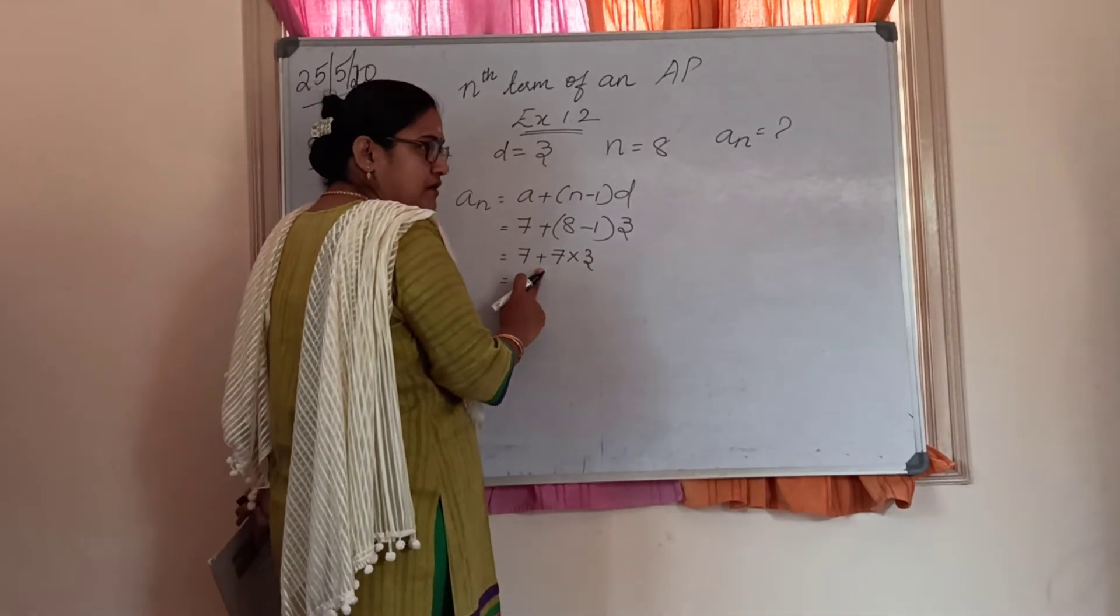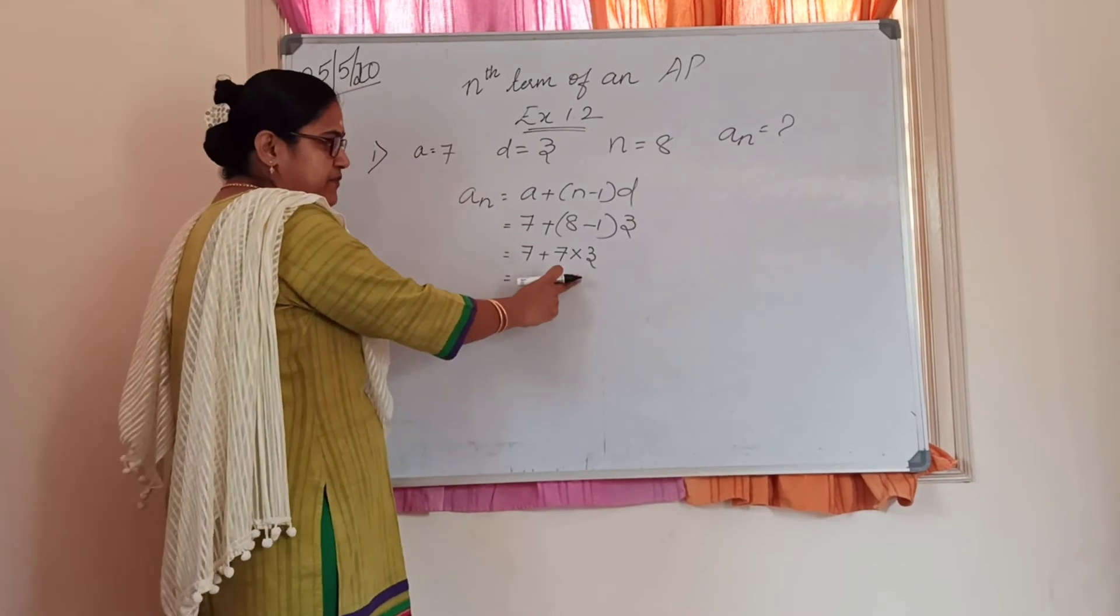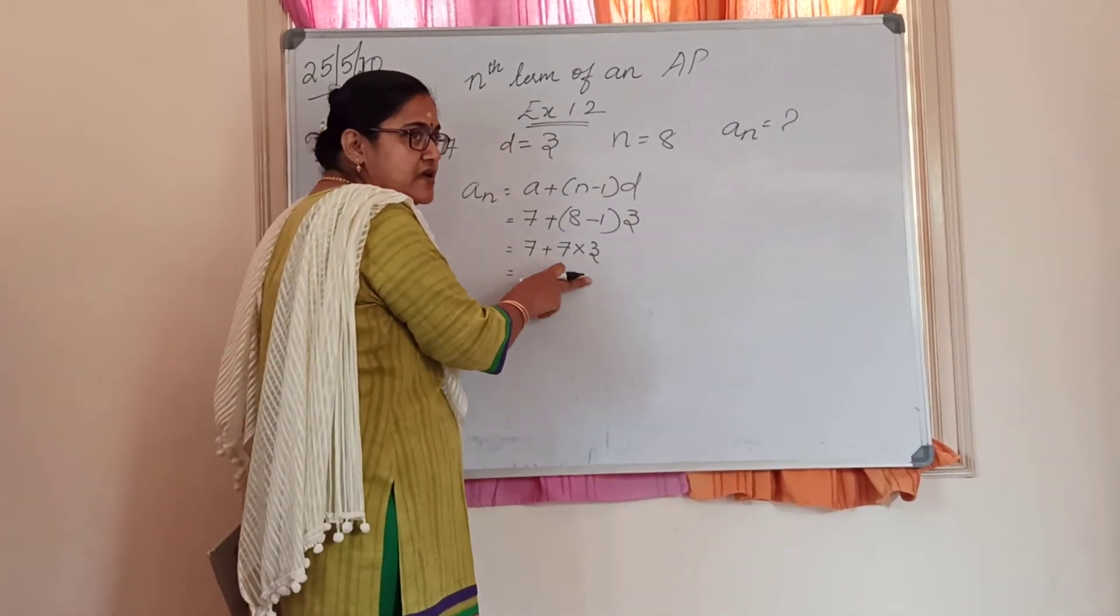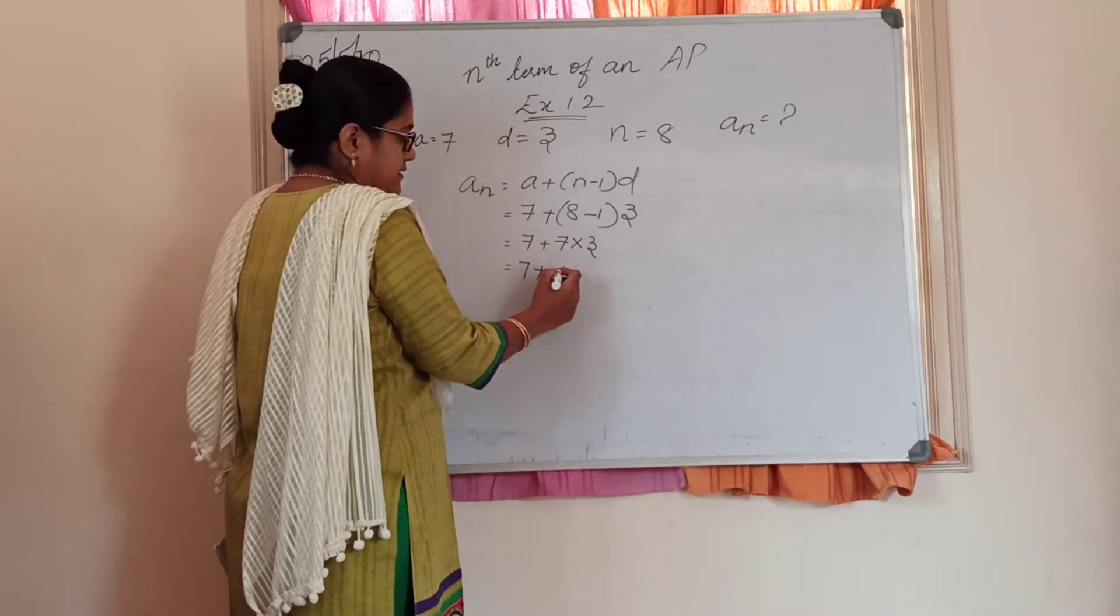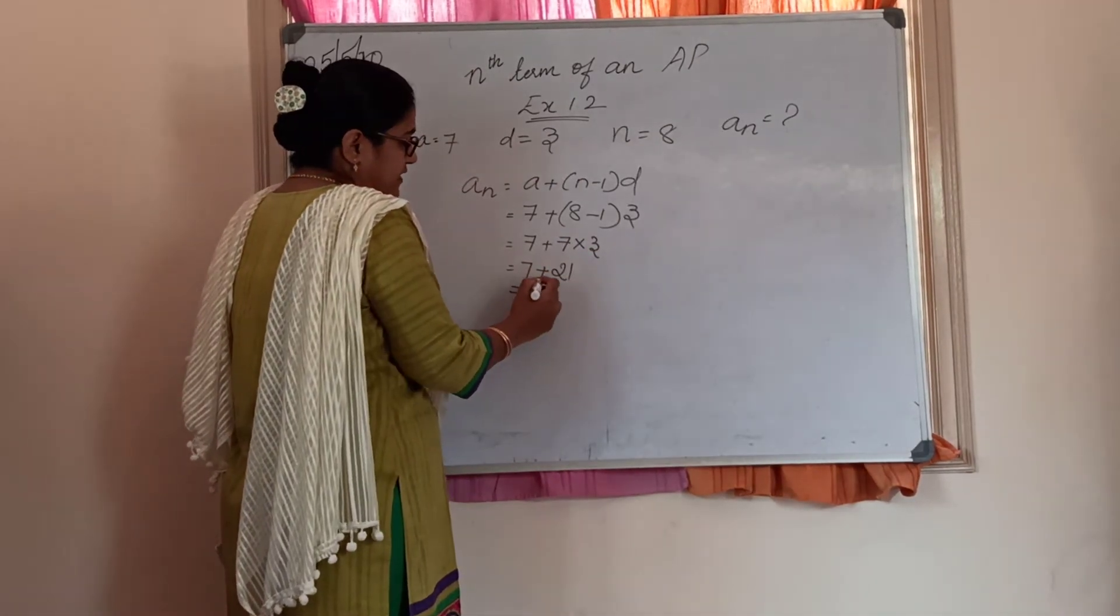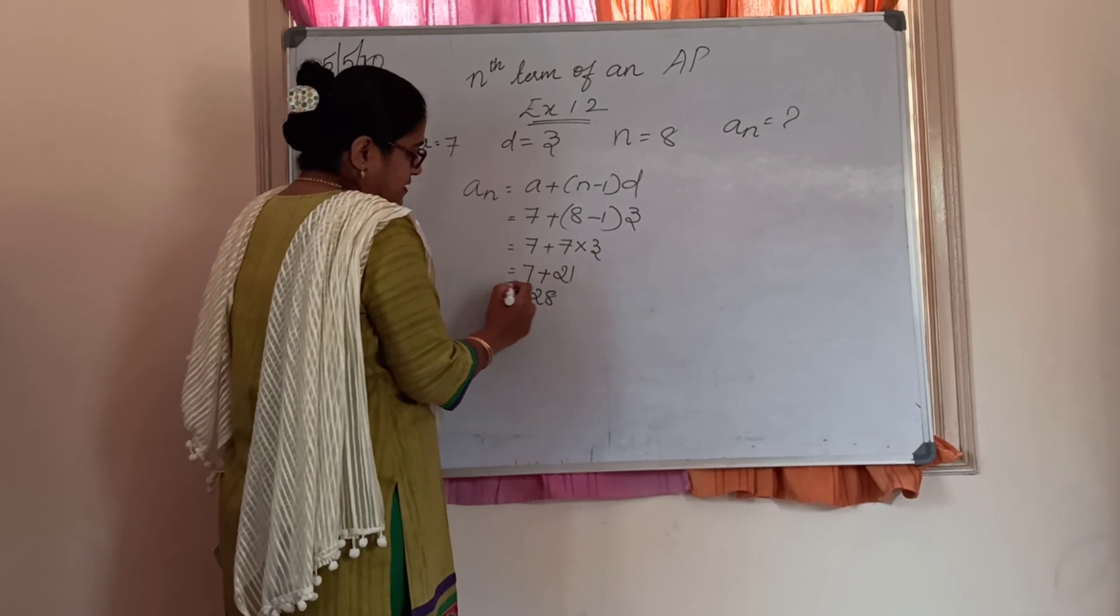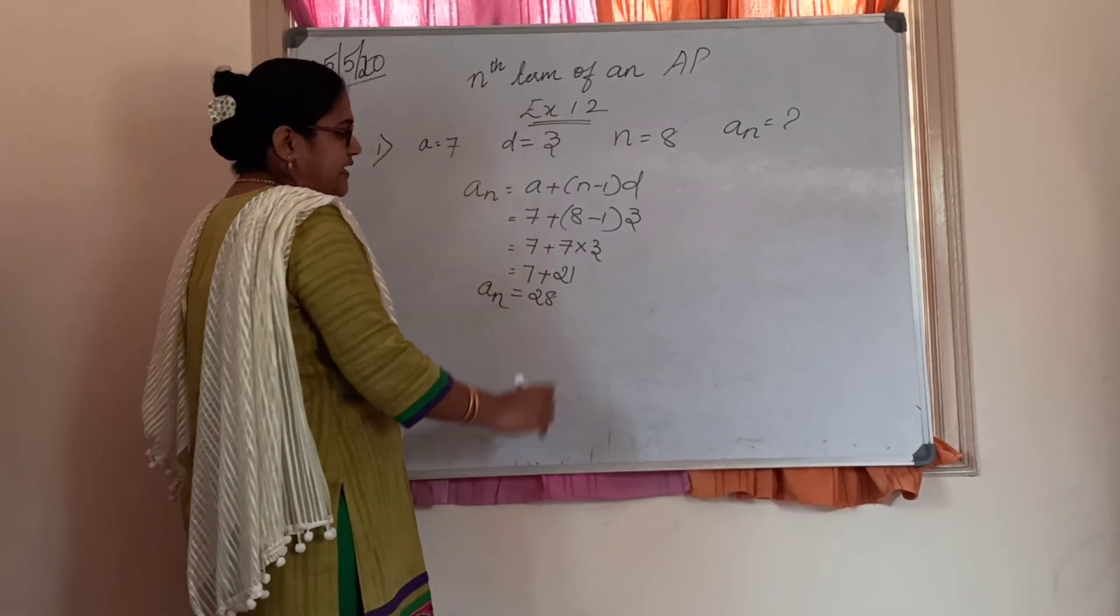Now we have two operations here: addition and multiplication. So multiplication has to be performed first. So 7 into 3 is 21. 21 plus 7 is 28. So the nth term is 28.